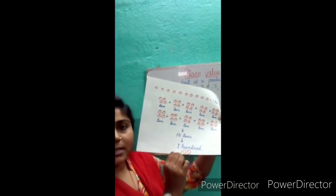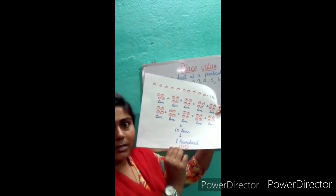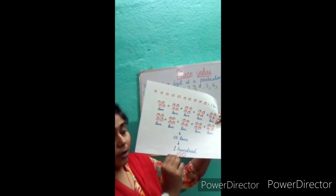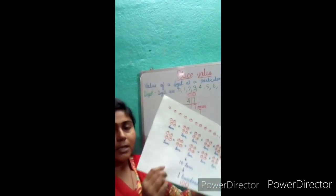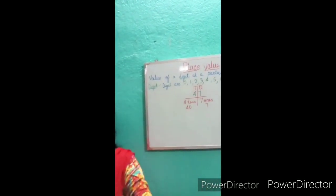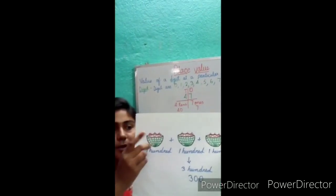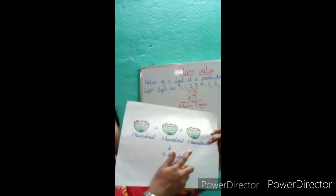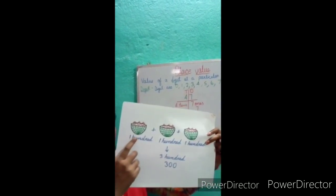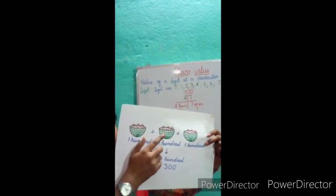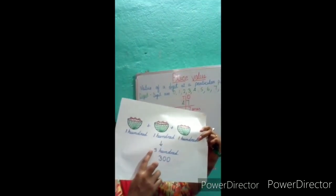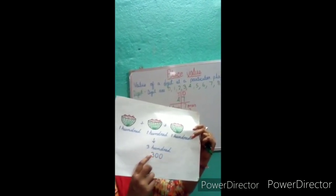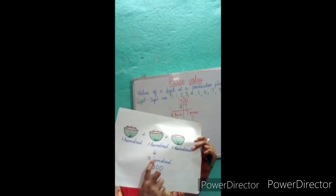So we got a 3 digit number. Now what did the farmer do? He kept all 100 apples in one basket — first basket, 100 apples. Second basket, 100 apples. Third basket, 100 apples. So how many apples in total? 100 plus 100 is 200, plus 100 is 300. 300 also has 3 digits. So 3 digit numbers start from 100.